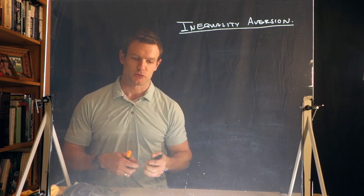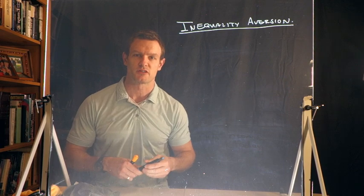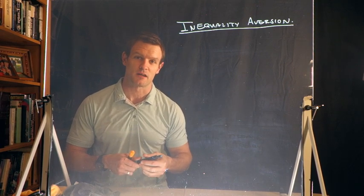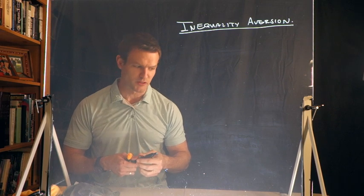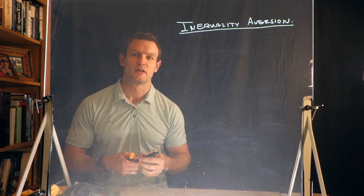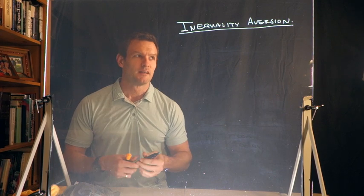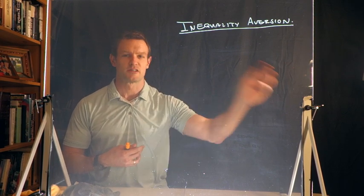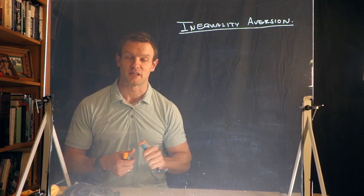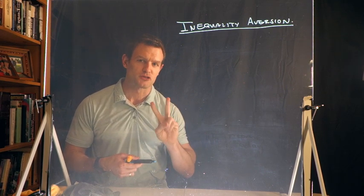In talking about this we're going to use as the basis for our discussion a paper from 1999 by Fehr and Schmidt. They were trying to understand preferences over inequality. The basic idea is we're going to construct a utility function for someone who might be inequality averse, and this has to capture two ideas.